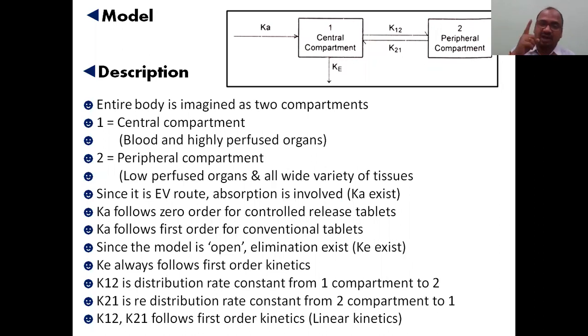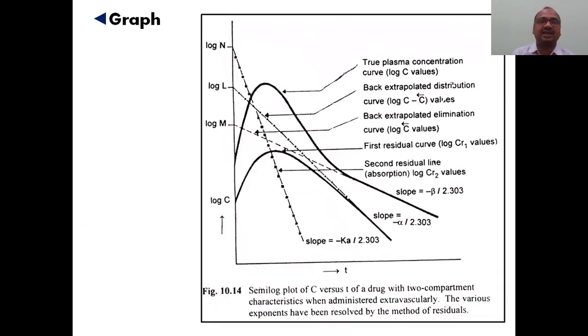In the graph, what happened to the first compartment, what happened to the second compartment, two graphs we will see. This is the first compartment line increasing. Absorption will be there and elimination will be there. This is absorption phase, this is distribution phase, and this is elimination phase in the first compartment.